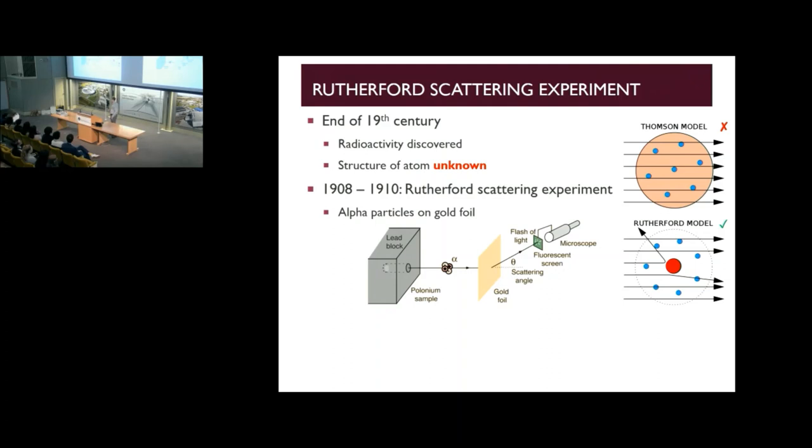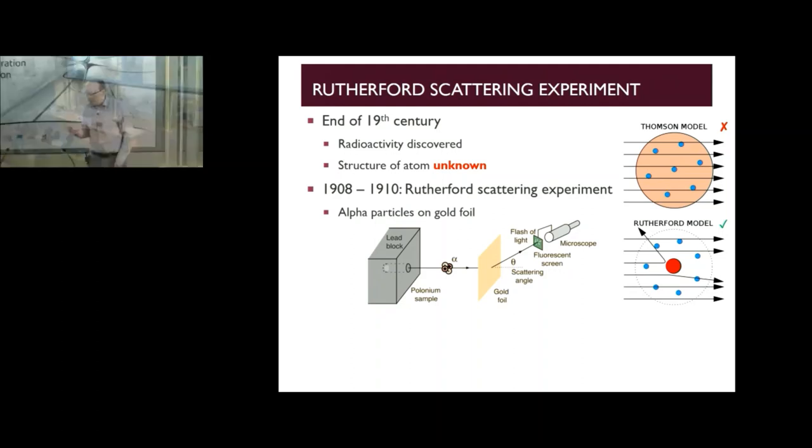About 110 years ago, Rutherford and his colleagues performed a set of scattering experiments. They took a radioactive source that emitted alpha particles and directed those at some gold foil, and they then measured how often those alpha particles were scattered through different angles.